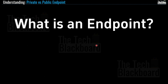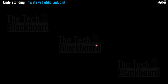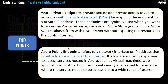Now that we understand what an endpoint, public IP, and private IP are, it's time to talk about private and public endpoints. Azure private endpoints provide secure and private access to Azure resources within a virtual network by mapping the endpoints to a private IP address. These are used when you want to access an Azure resource such as an Azure storage account or Azure SQL database from within your vNet without exposing it to the public internet. Azure public endpoints refer to a network interface or IP address that is publicly accessible over the internet, allowing users from anywhere to access services hosted in Azure such as virtual machines, web applications, or APIs.